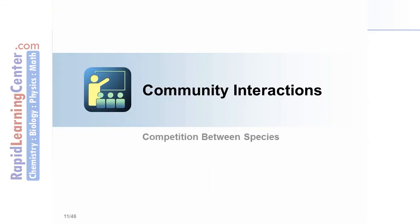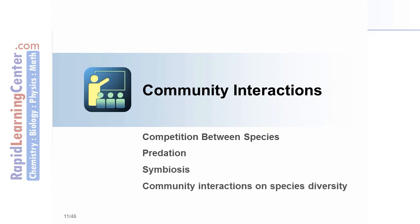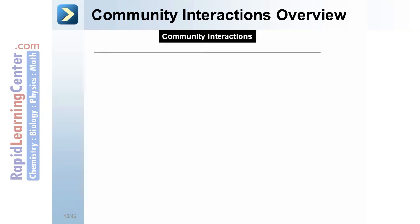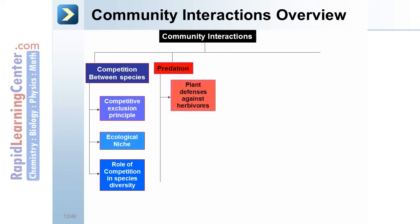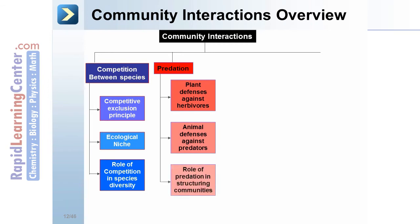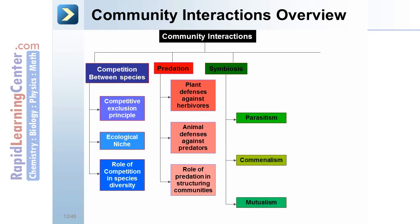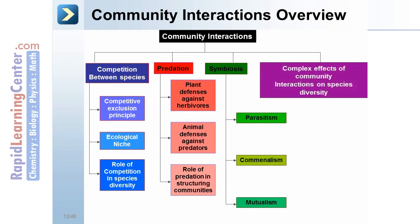In this segment of the tutorial we'll discuss community interactions, including competition between species, predation, symbiosis, and community interactions on species diversity. Competition between species leads to the competitive exclusion principle, ecological niche, and the role of competition in species diversity. Predation involves plant defense against herbivores, animal defense against predators, and the role of predation in structuring communities. Symbiosis can take the form of parasitism, commensalism, and mutualism.